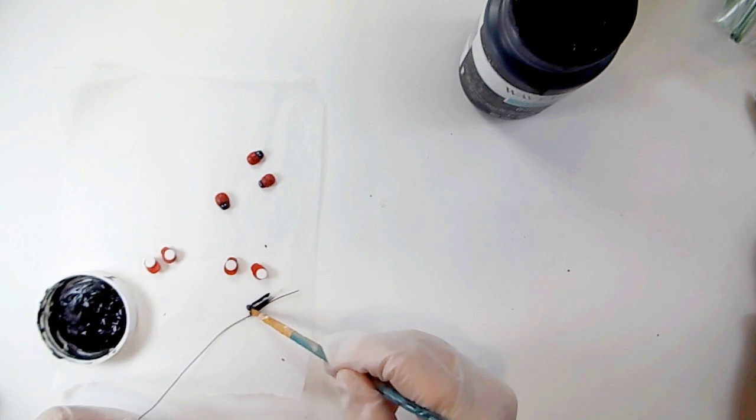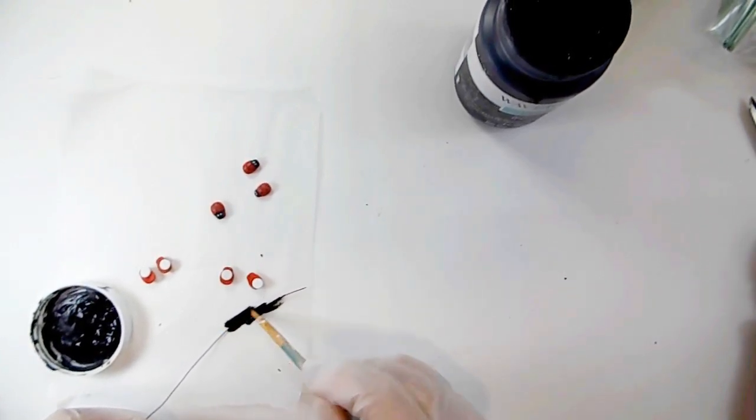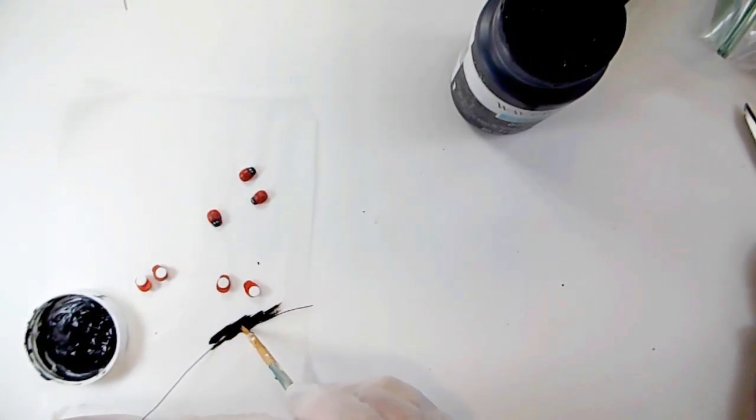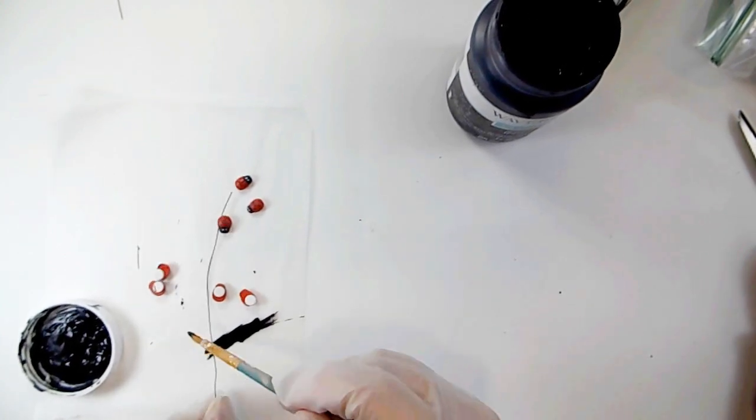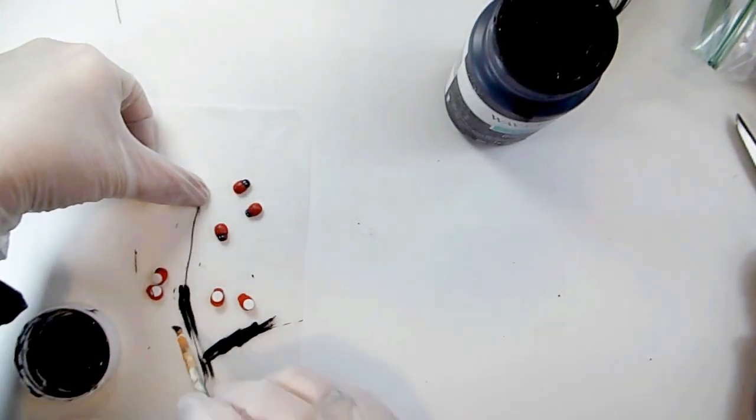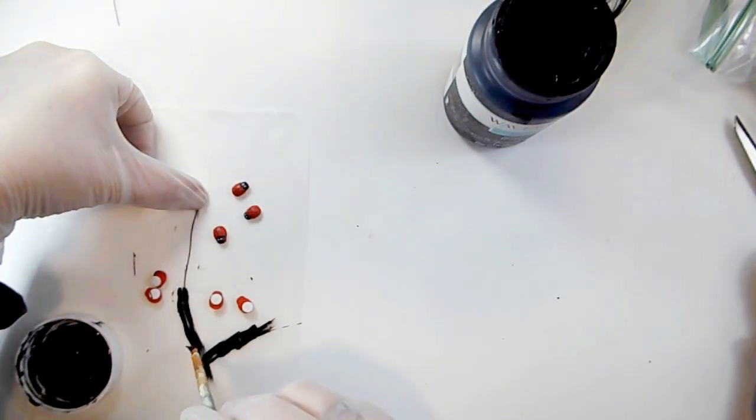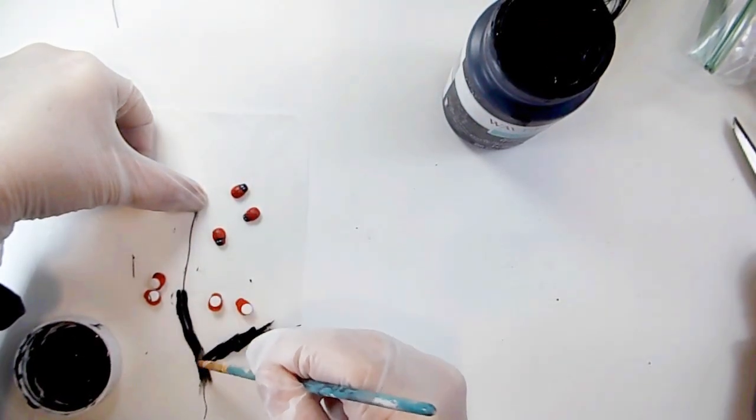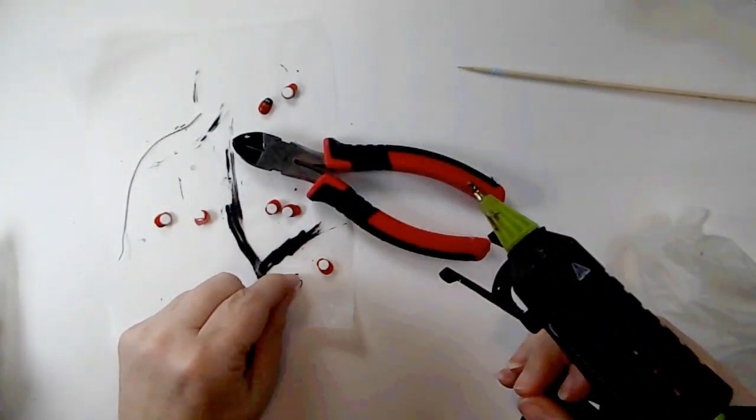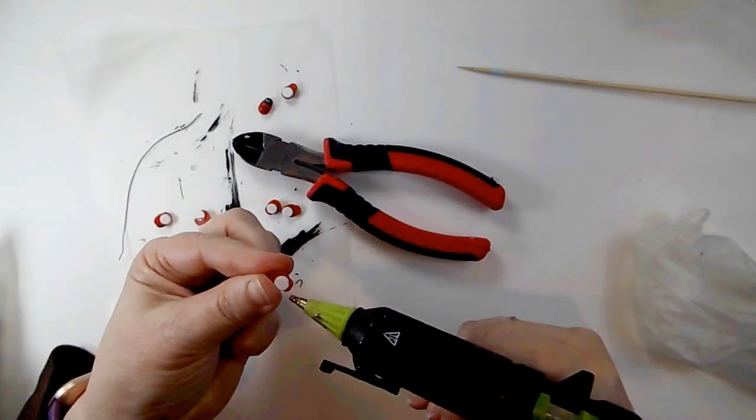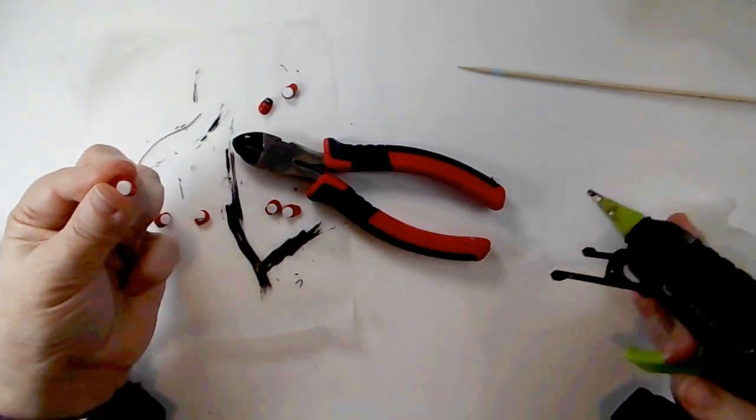I started off with this floral wire and I'm painting it with my Waverly Chalk Paint in the color ink. This is one of the best black paints I have ever found. It is such a strong pigment to it. So I'm painting this wire along with these little ladybugs that I found on Amazon because I think they need their little antennas.